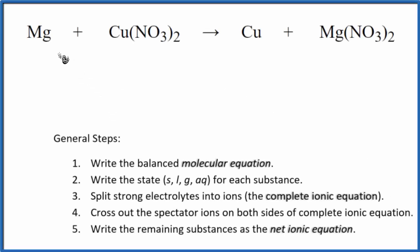In this video, we'll write the balanced net ionic equation for Mg plus Cu(NO3)2, magnesium plus copper(II) nitrate. First thing we need to do is balance the molecular equation. When we look at this, the molecular equation is already balanced, so we don't have to do that.